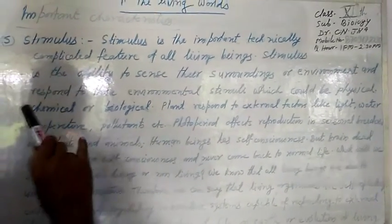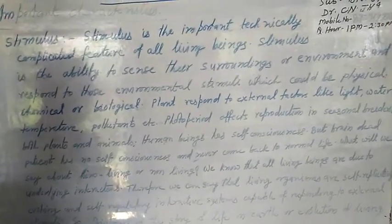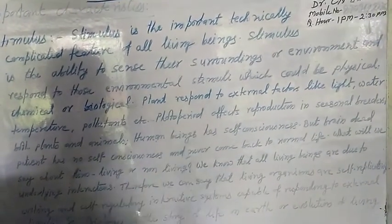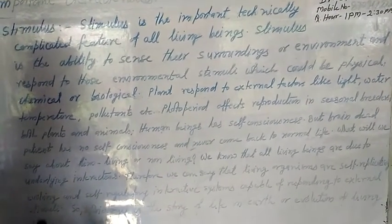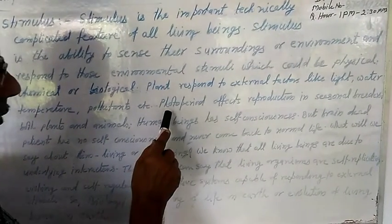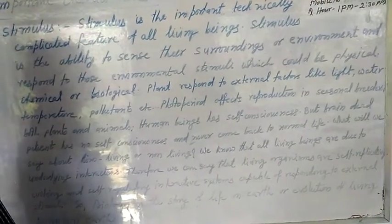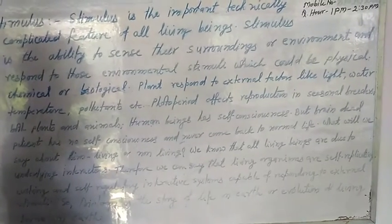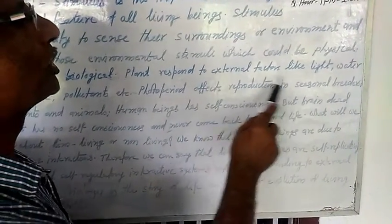Plants respond to external effectors such as light, water, temperature, and pollutants. Photoperiod means the duration of light available for living beings. This photoperiod influences the reproduction of seasonal breeders.